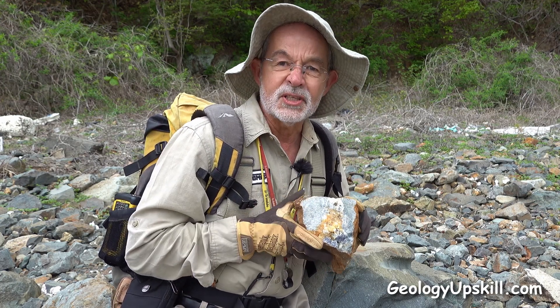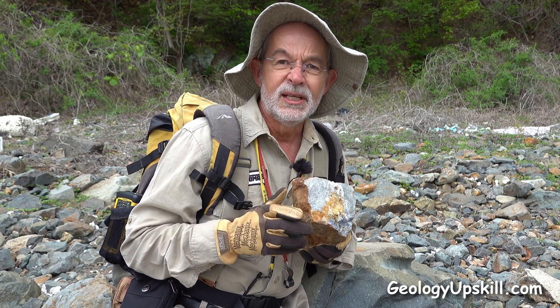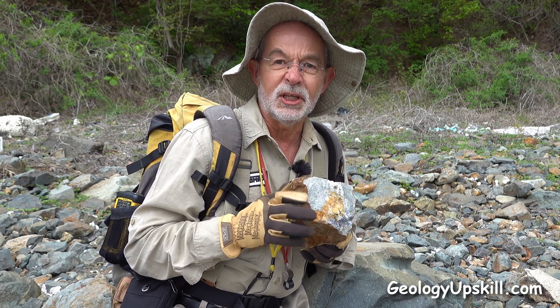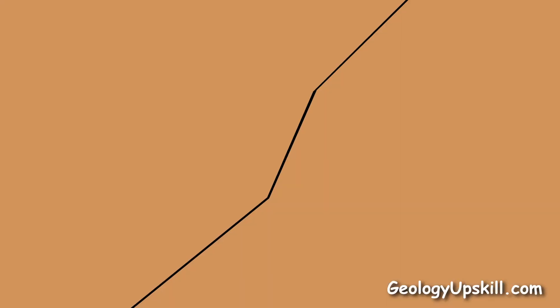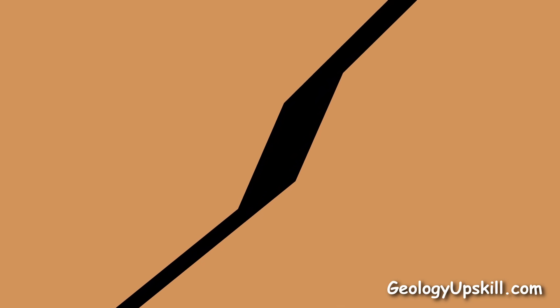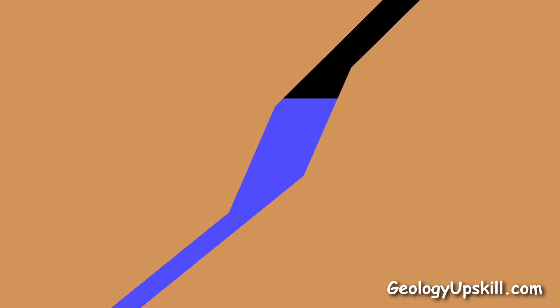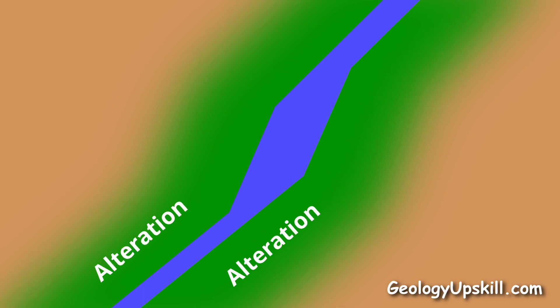This is a beautiful example of the difference between alteration and infill, and why it's really important to tell the difference between those two. When a vein or a breccia opens up due to structural movement or fluid overpressure, the resulting cavity often fills with hydrothermal fluid. Chemical reactions between the fluid and the wall rocks convert some of the minerals in the rock to new minerals like sericite and chlorite. That is the process of alteration.